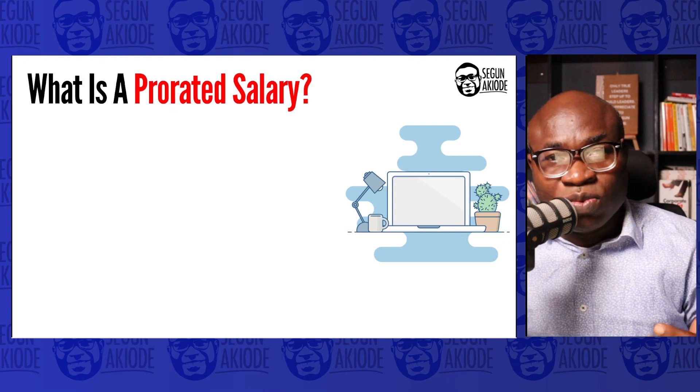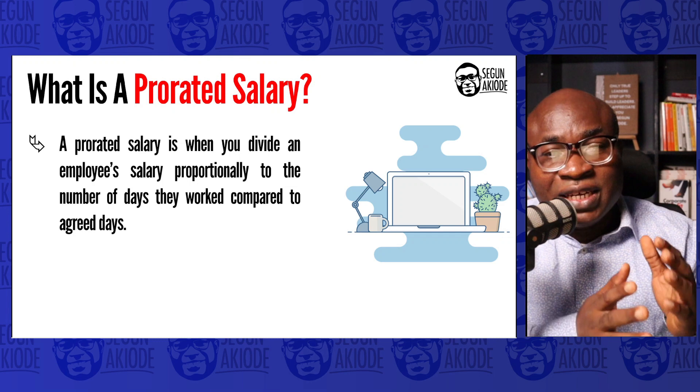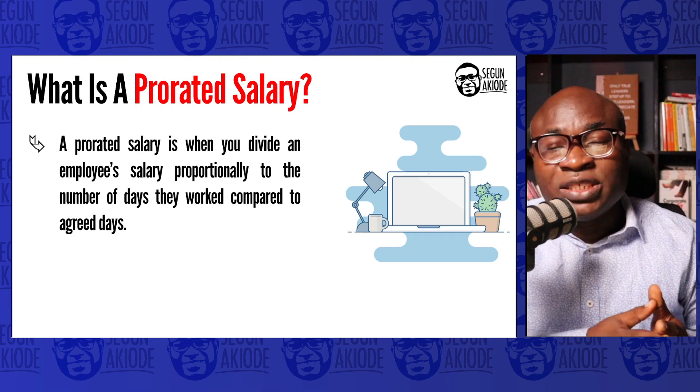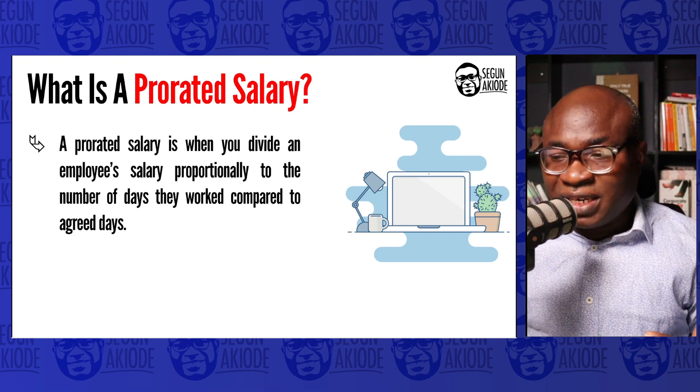Let's start by understanding what a prorated salary is. A prorated salary is when you divide an employee's salary proportionally to the number of days worked compared to the agreed days. For example, if an employee is expected to work for 30 days but only worked 12 days, the employer would not pay for the 18 days not worked.